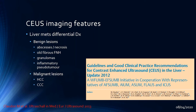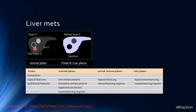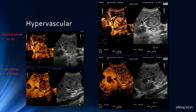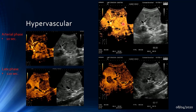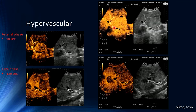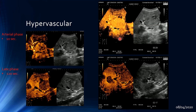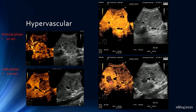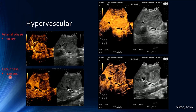Liver metastases can be hypo-, iso-, or hyper-enhanced in the arterial phase, sometimes showing ring-like hyper-enhancement, and then appear anechoic or markedly hypoechoic in the portal and late phases due to profound washout. An example of a hypervascular liver metastasis shows a large lesion in the left lobe that is hyper-enhanced in the arterial phase, with multiple lesions showing washout after 120 seconds.